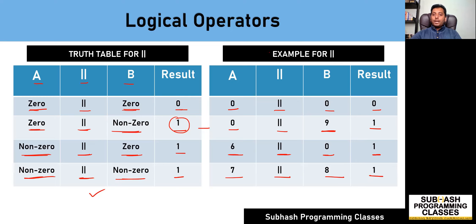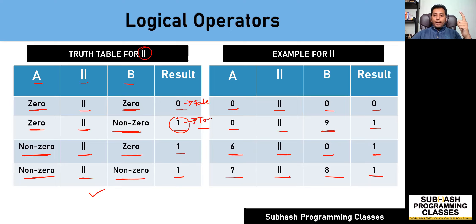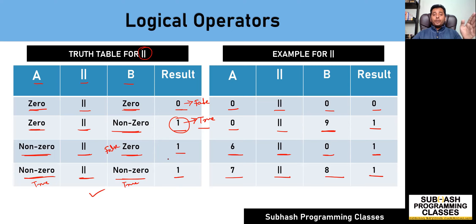That is why it is important to first understand how this truth table works. Once you understand and memorize this truth table, it becomes much easier to solve expressions based on logical operators. One more thing: wherever you see zeros and ones, they are considered as true and false. Zero is considered as false and one is considered as true. In fact, in C language, zeros are considered as false, and any non-zero value is considered as true. I would recommend you to memorize this truth table for logical OR before proceeding further.